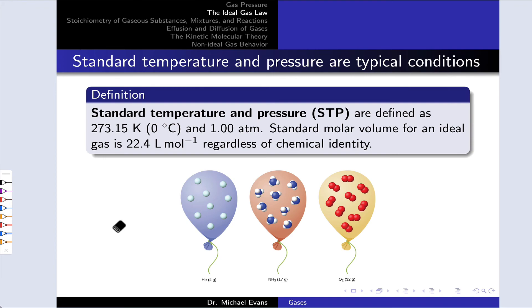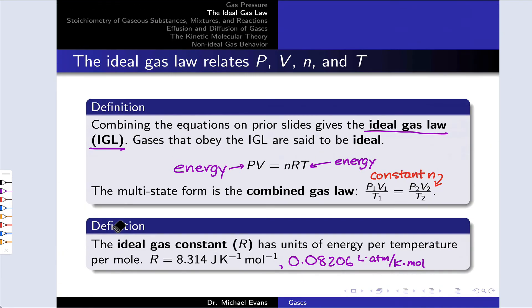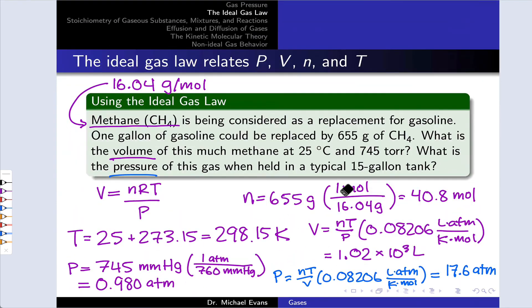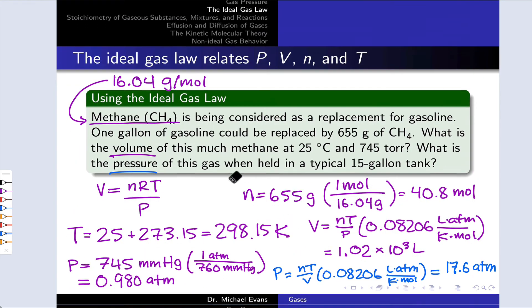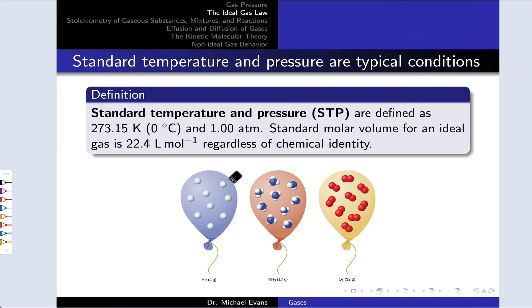One of the amazing things about the ideal gas model is that it has no information or needs no information about the identity of the gas. This is remarkable because unless we're doing something stoichiometric, like we did in this practice problem, we actually don't need to know the molecular identity of the gas, the chemical formula, to know about its pressure, temperature, volume, and number of moles.